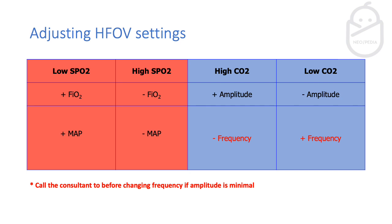To adjust your high frequency ventilation settings: if you have low saturations or poor oxygenation, you can increase either your FiO2 or your MAP — increase MAP in steps of one to two centimeters of water. If saturations are high, wean down the FiO2 or decrease the MAP. If you have high CO2, increase the amplitude. You can also reduce frequency, but speak to the consultant first before changing that.